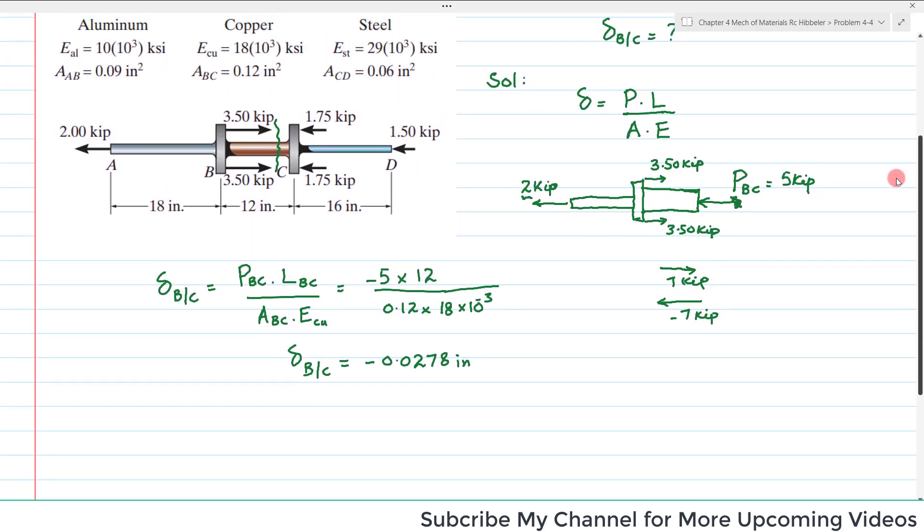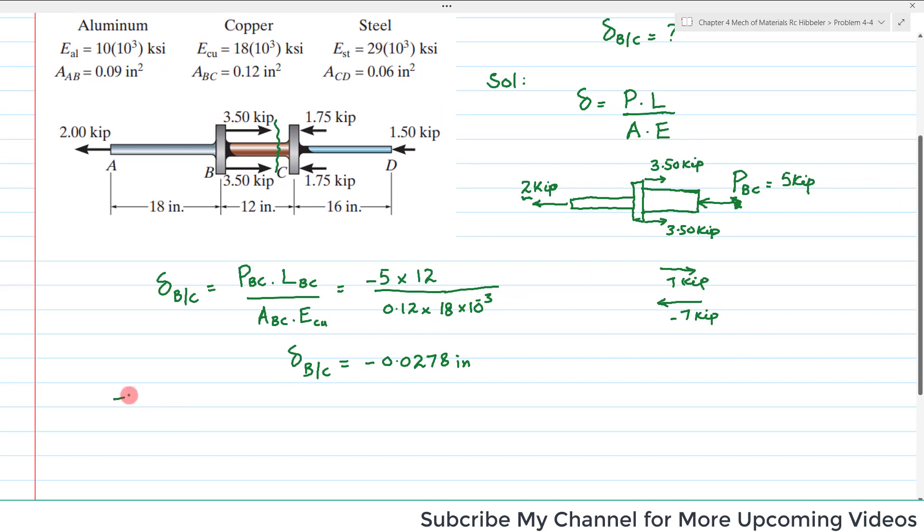This negative sign shows that B moves—point B moves towards C. So this point B, due to this type of loading, moves toward point C.